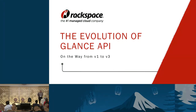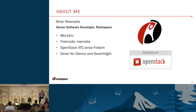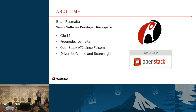So the Evolution of the Glance API — talking about the path from V1 to V3. A word about me: I'm Brian Rossmeta, a senior software developer at Rackspace. My Twitter handle is BrianR, and you'll see me in IRC as Rossmeta. I've been an OpenStack ATC since Folsom, and I'm a driver for Glance and also for Searchlight. I'm not Nikhil Komamar — he could not be here and had to cancel his trip, so I'm filling in for him.